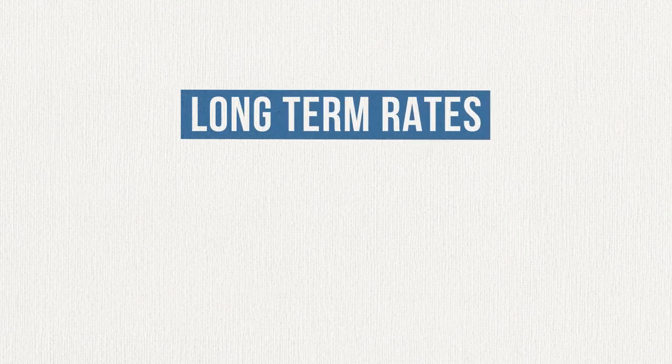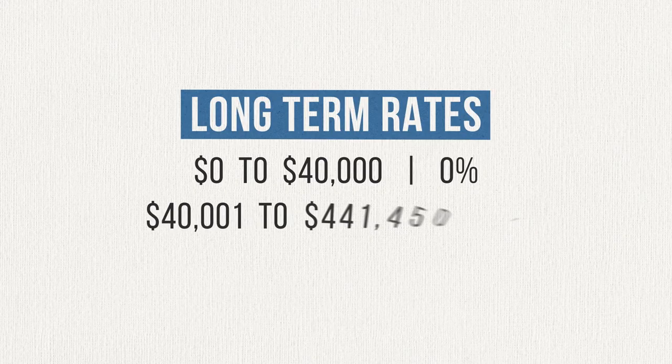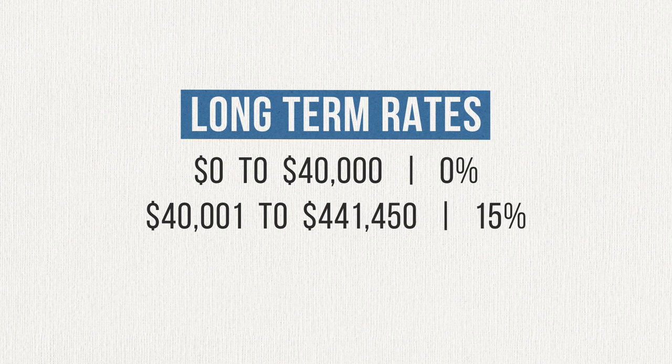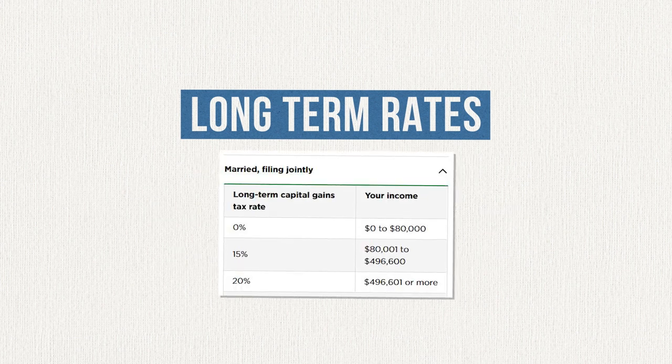Long-term capital gains taxes are also dependent on your income. Historically, the top long-term capital gains tax rates have been as high as 77% just before World War I. They have also been as low as 12.5% in the years leading up to the stock market crash of 1929 and the Great Depression. For the past 25 years, though, things have been pretty stable — the top long-term capital gains tax rates have been somewhere between 15% and 24%. Right now, if you make less than $40,000 per year, your long-term capital gains tax rate is 0%. If you make between $40,001 and $441,450 per year, your long-term capital gains tax rate is 15%. And if you earn more than $441,451 per year, your long-term capital gains tax rate is 20%. The numbers are a little bit different if you're married, but they're still in the same ballpark, as you can see here.